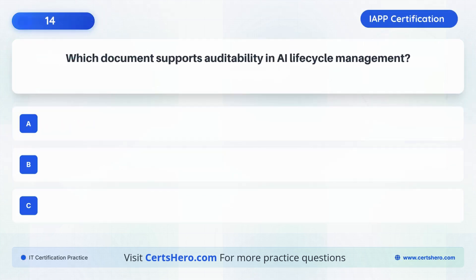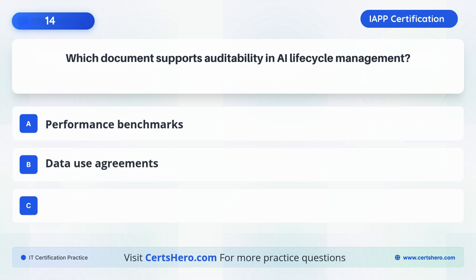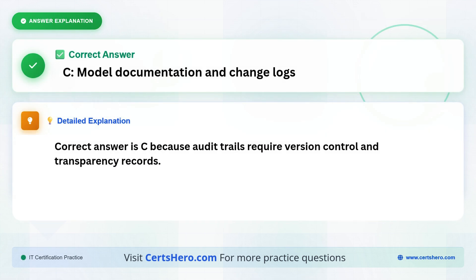What best supports auditability in AI lifecycle management? A. Performance benchmarks. B. Data use agreements. C. Model documentation and change logs. The correct answer is C: Model documentation and change logs, because audit trails require version control and transparency records.